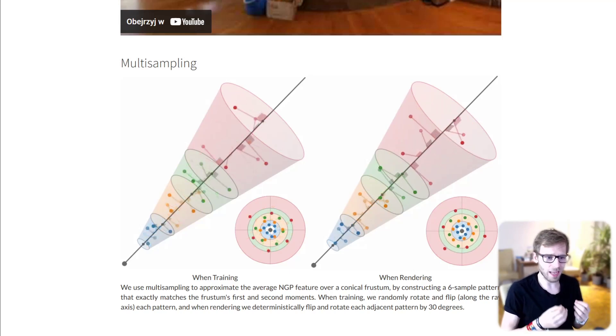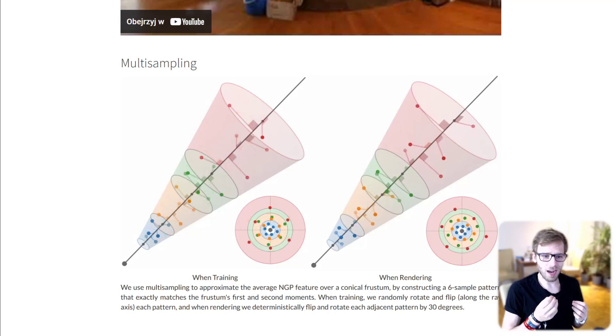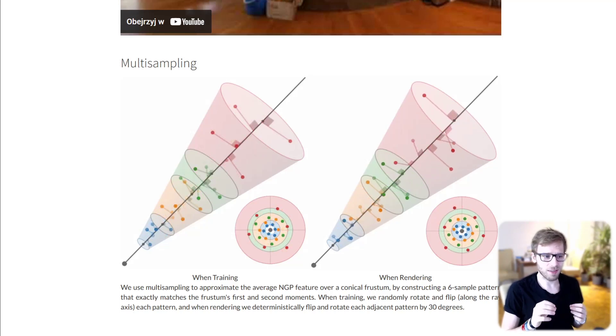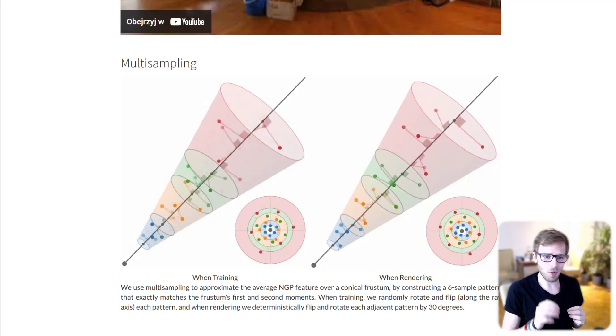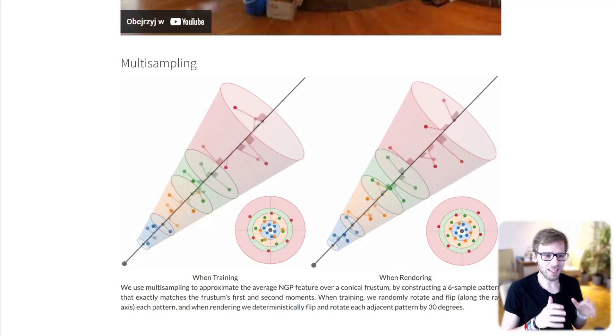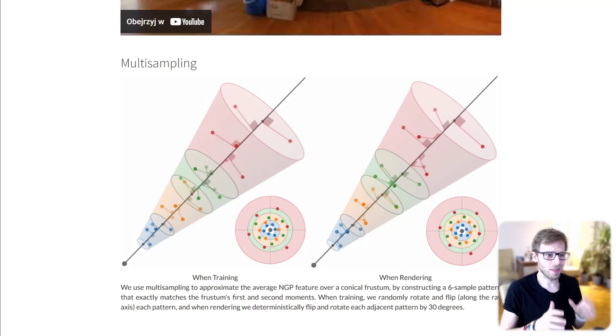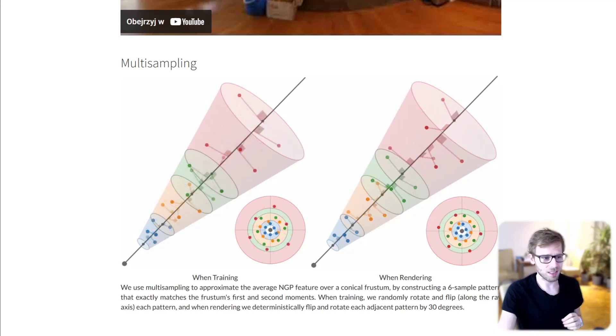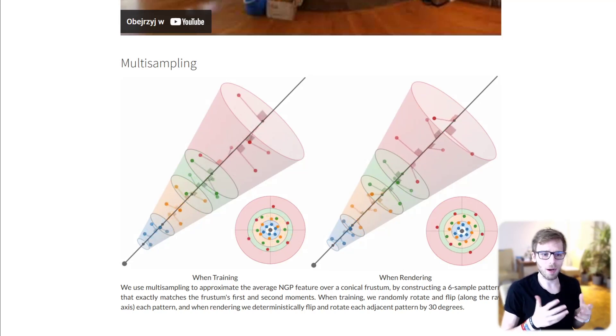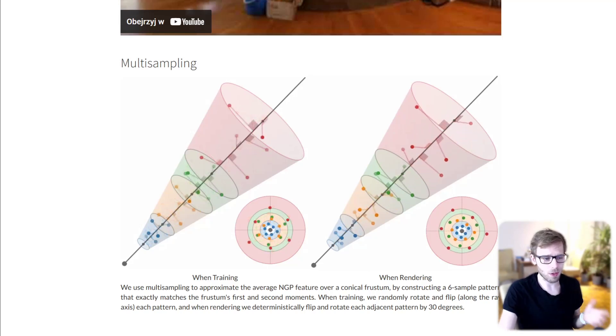A method that yields error rates that are 8-77% lower than either pure techniques, and that trains 24 times faster than MIP-NeRF 360. So let's talk about multi-sampling in this particular approach.